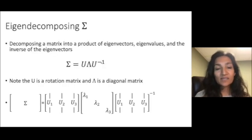If we eigendecompose this matrix, which is usually denoted as sigma, we can decompose it into a product of a matrix of eigenvectors, eigenvalues along the diagonal, and the inverse of the eigenvectors.